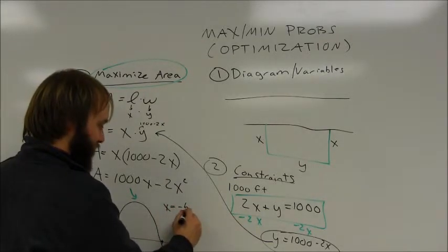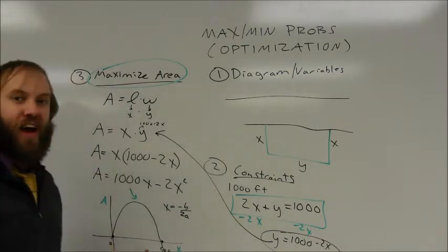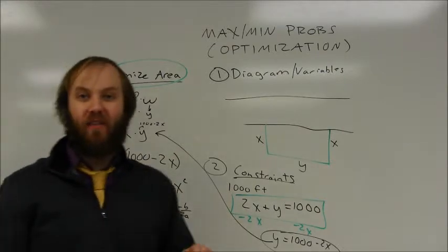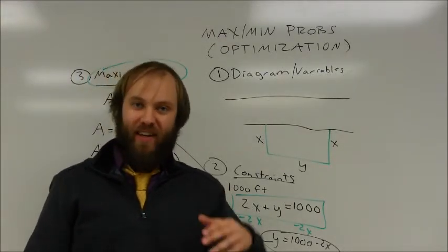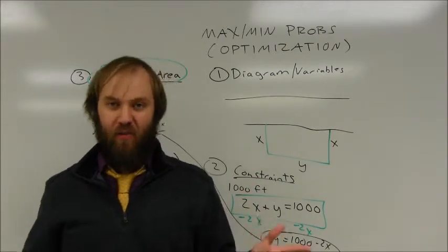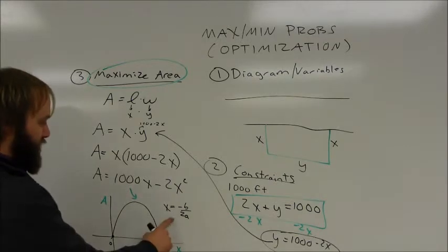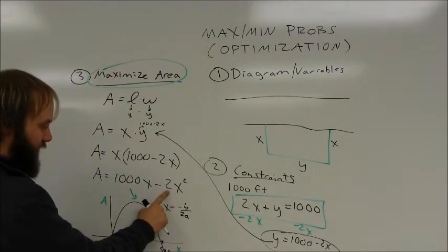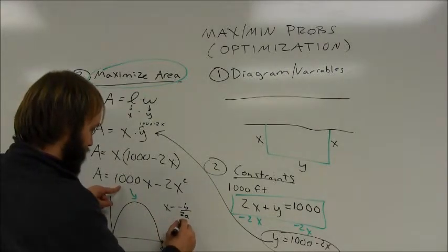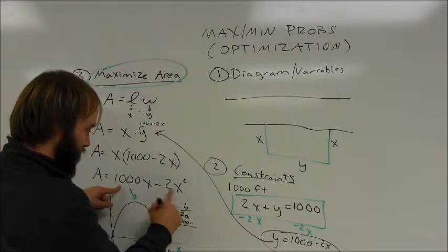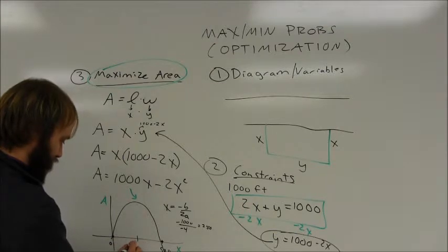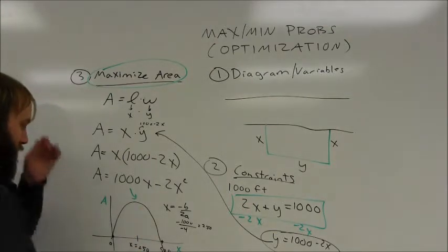We know the x-coordinate of a vertex is negative b over 2a. Notice the graph in this case is symmetrical. So it crosses at zero and it crosses at 500. You may be able to figure out that it's equal to 250 although it's not always going to cross at zero and that may not always, if it's not symmetrical you won't be able to do that. But in this case that could work. But let's use the negative b over 2a. My a value is going to be negative 2. My b value is the coefficient of x. That's going to be negative 1000 divided by 2 times the a value. That'll be negative 4. That's 250. So when x is 250 this graph is going to hit a maximum.